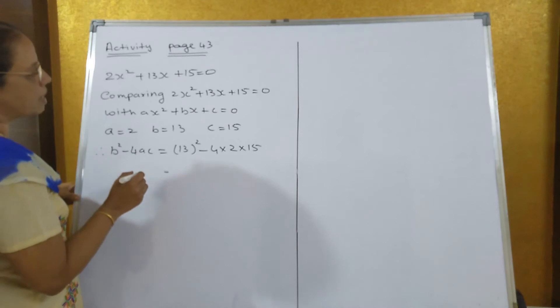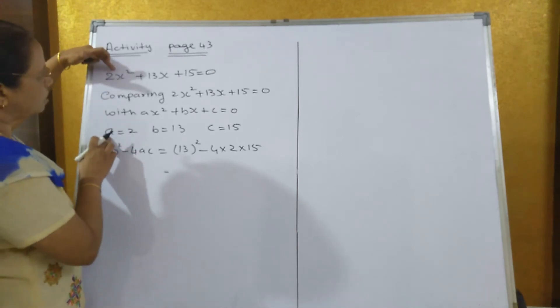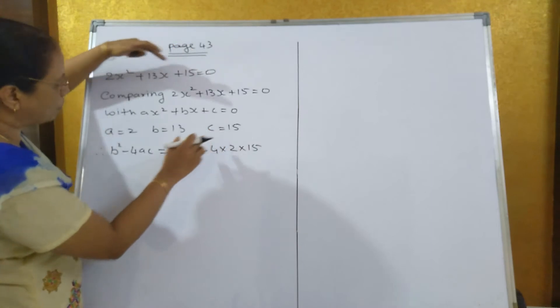When you compare it with ax² + bx + c = 0, we will get a = 2, b = 13, c = 15.